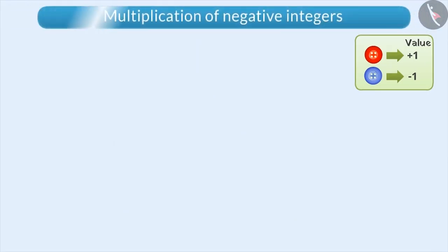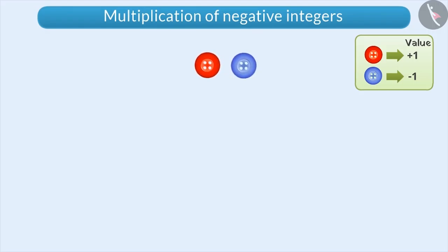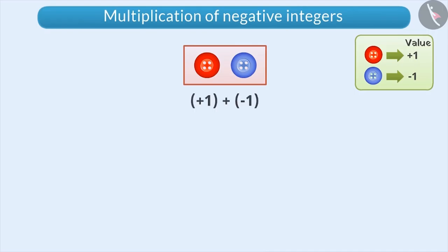Now, let's learn multiplication of two negative integers. Suppose we take one red and one blue button — what will be their value? Since positive 1 plus negative 1 is equal to zero, the value of one red and one blue button is zero.